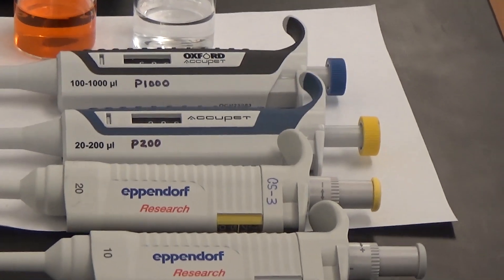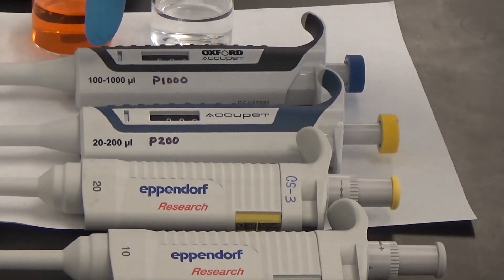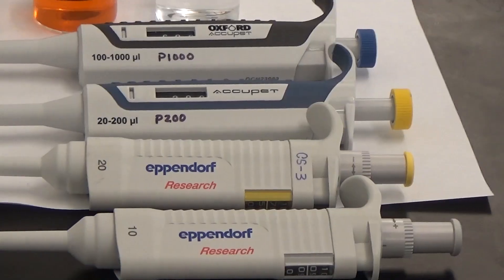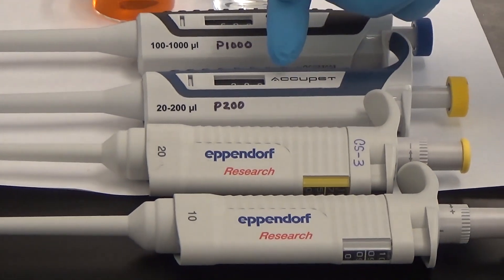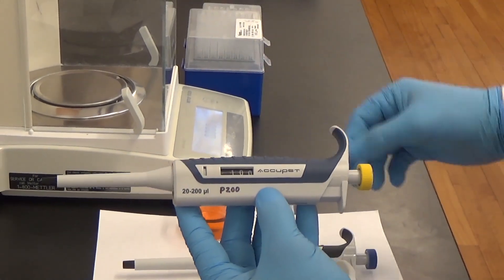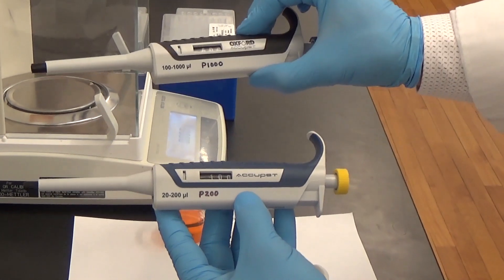Never exceed the upper or lower limits of these pipetters. To achieve the greatest accuracy, always choose the smallest size pipette. For example, if you want to transfer 100 microliters, then you should use a P100 or P200 instead of a P1000 microliters size.